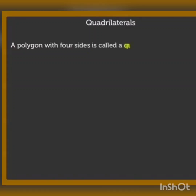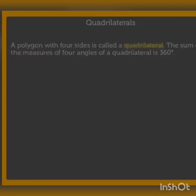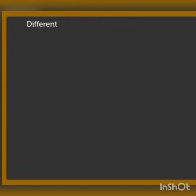Today we have already learned quadrilaterals, so let's revise it once. A quadrilateral is a polygon with four sides, and the sum of the interior angles of a quadrilateral is equal to 360 degrees.